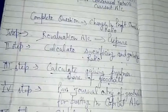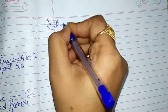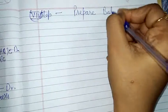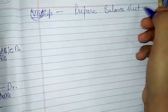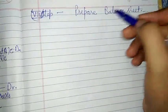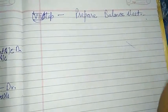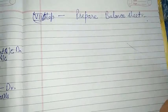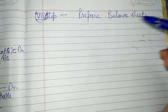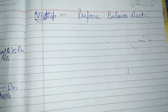Seventh and final step: prepare the Balance Sheet. Balance sheet को total किया जाएगा और आपका complete question हो जाएगा। Now I will take a new numerical from your book — T.S. Grewal — and we will solve the questions step-by-step according to this procedure.